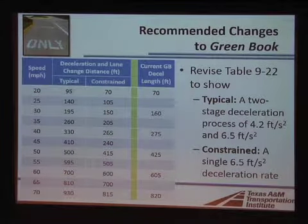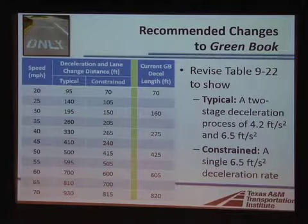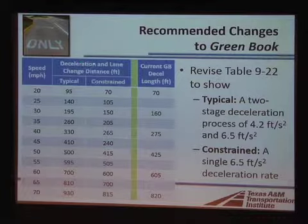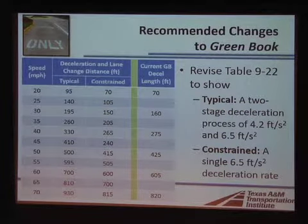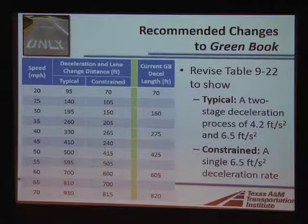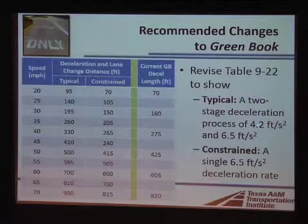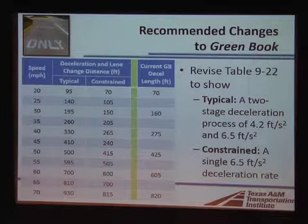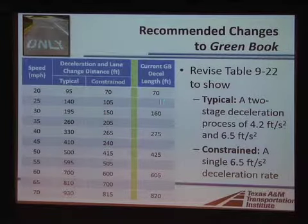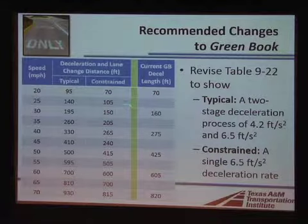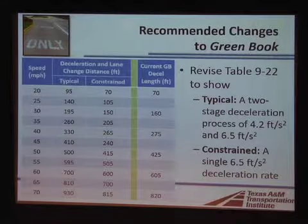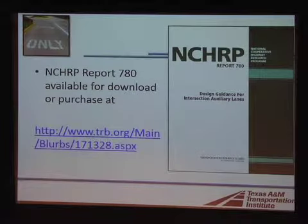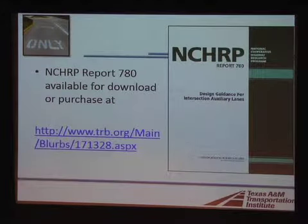Going along with the new figure is a revised table. We recommended two different sets of values for deceleration and lane change distance combined: a typical value, which still uses a two-stage deceleration at 4.2 and 6.5 feet per second squared, and a constrained value for situations where right-of-way or other constraints prohibit providing the full length — with constraint values fairly similar to what is currently in the Green Book. The new table also fills in multiples of five on the speed limit to provide extra information to the designer. This is published as NCHRP Report 780 and is available now.